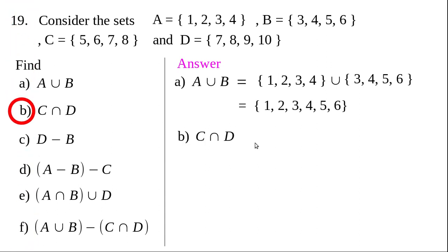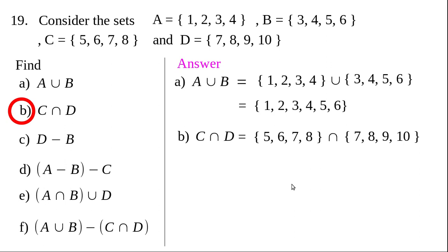Now for question (b), C intersection D. Write set C first, then set D. The meaning of intersection is the set of all common elements. The common elements present in these two sets are 7 and 8, therefore C intersection D equals {7, 8}.